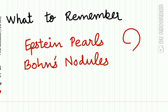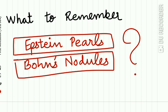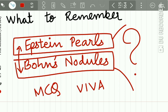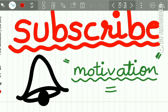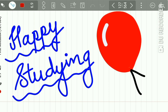What to remember for this topic: you must remember what Epstein pearls are along with their location and origin, and what Bohn's nodules are along with their origin and location, because students tend to confuse between these two. These two entities are frequently asked questions in MCQs and viva exams, so remember both clearly. I have provided pictorial representations of these two in this lecture. Subscribe to our channel — increasing the subscriber count motivates me to upload more lectures. Happy studying!